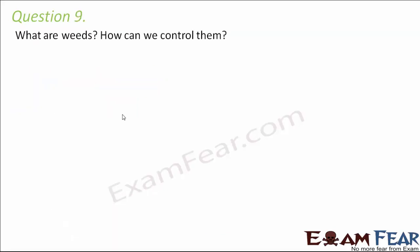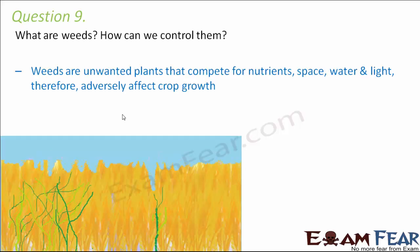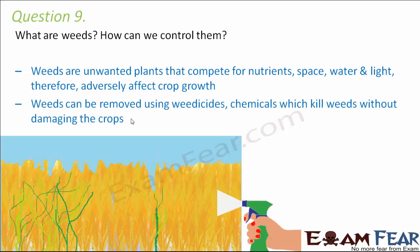Question number nine: what are weeds and how can we control them? Weeds are unwanted plants that compete with desired crops for nutrients, space, water, and light, adversely affecting crop growth. In a wheat field, weeds grow on their own and compete with wheat for the same resources, causing the wheat crops to suffer. Weeds can be controlled by application of weedicides — chemicals that kill weeds alone without damaging the crops.